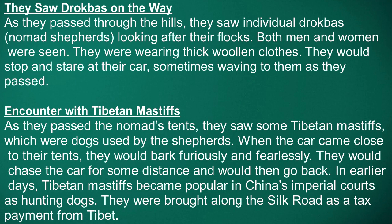The second major subheading is about the Drokpas. The group saw Drokpas on the way. As they passed through the hills, they saw individual Drokpas, who are nomad shepherds looking after their flocks. Both men and women were seen wearing thick woolen clothes. They would stop and stare at the car, sometimes even waving as it passed.